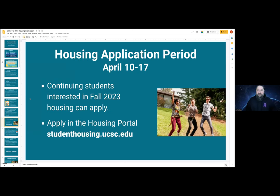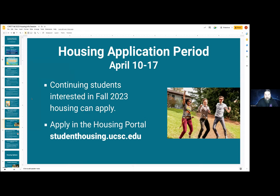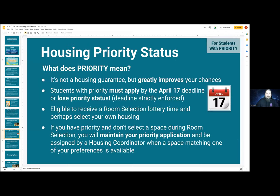Let's swing back to the application period — that's April 10th to 17th. During that period, any continuing students interested in fall housing can apply through the housing portal at studenthousing.ucsc.edu. This is critical to keep your housing priority status. Priority is not a housing guarantee, but it will greatly improve your chances of finding housing with us. If you have priority, you must apply by the April 17th deadline or you will lose your priority status.